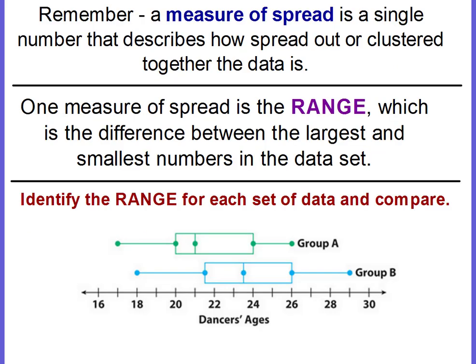Remember, a measure of spread is a single number that describes how spread out or clustered together the data is. One measure of spread that we have already learned about is the range, and the range is the difference between the largest and the smallest numbers in a data set.